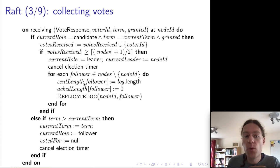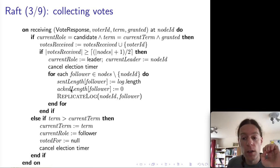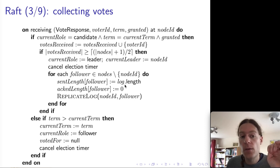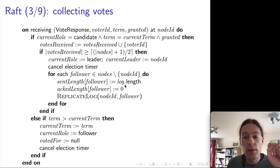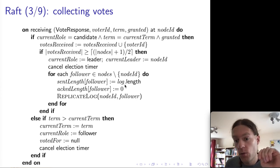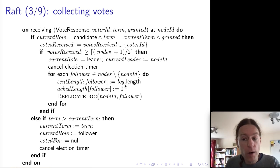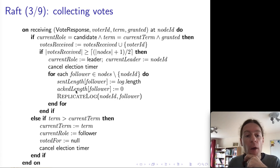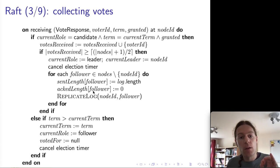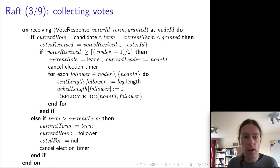We also set up two variables for all followers: sentLength and ackLength, which are maps from node ID to an integer. The sentLength for each follower is initialized with the length of the log on the leader — assuming the follower has already received all log entries, correcting this later if needed. The ackLength is the number of log entries counted from the beginning that a particular follower has acknowledged as having received, initialized to zero and increased as we receive acknowledgements.